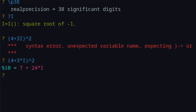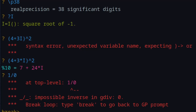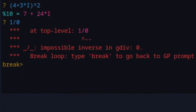You will sometimes get errors in PartyGP — that's normal, everybody makes mistakes. For example, typing 1/0 will produce an error because division by zero is impossible, and it goes into break mode. When that happens, just type 'break' to return to the normal PartyGP mode.